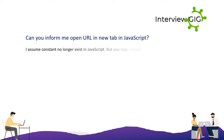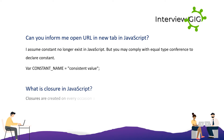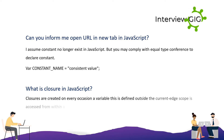Although constants do not technically exist in JavaScript, you can follow a naming convention to declare constants: var CONSTANT_NAME = value. What is closure in JavaScript? Closures are created whenever a variable that is defined outside the current scope is accessed from within some inner scope.